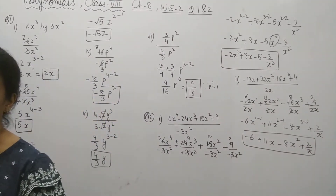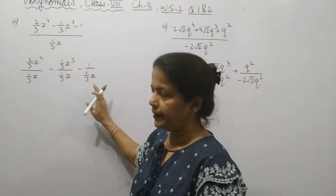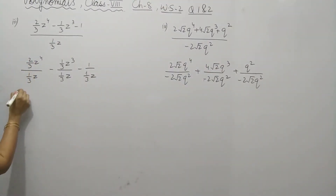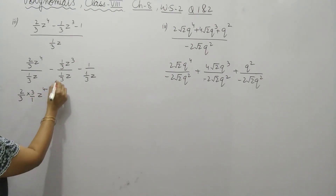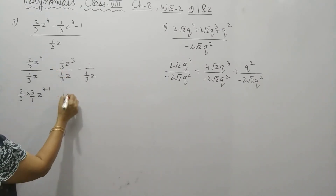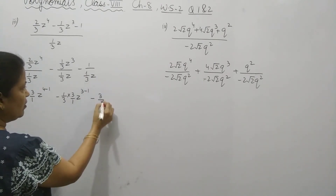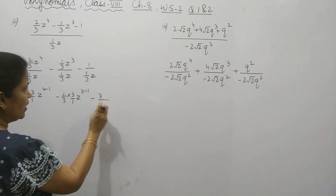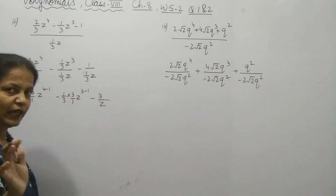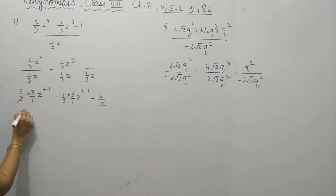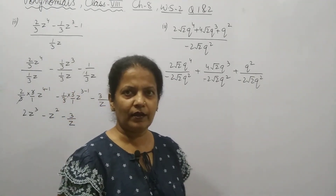Now, the next part. Same procedure — write them separately. For the fraction 2/3 divided by 1/3, we write it as 2/3 multiplied by 3/1 (reciprocal). This gives z power 4 minus 1. Similarly, 1/3 goes to the upper side as 3/1, giving z power 3 minus 1. And for the last term, z remains in the denominator — only numbers shift. After cancelling, the answer is 2z³ minus z² minus 3/z.